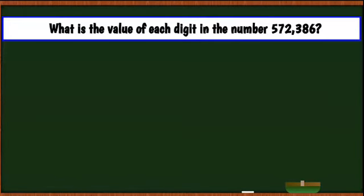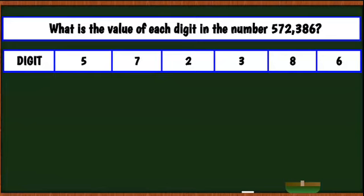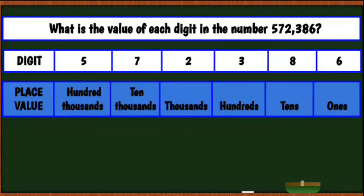Next example: what is the value of each digit in the number? We have our number and our place values. Six — its place value is ones; eight — tens; three — hundreds; two — thousands; seven — ten thousands; and five — hundred thousands.